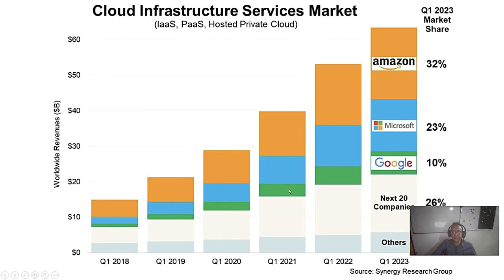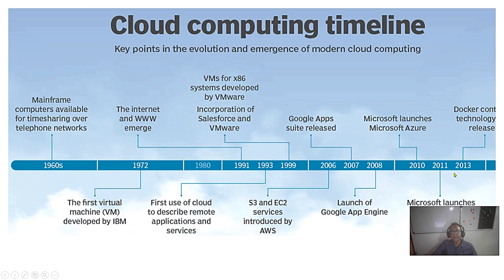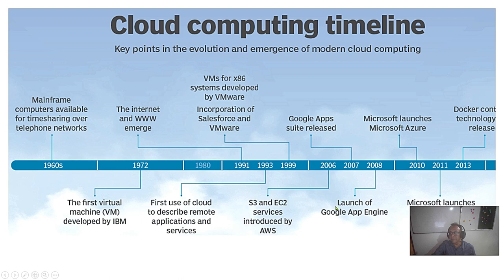The cloud infrastructure market shows Amazon still highest, followed by Microsoft and Google. AWS S3 is a simple object storage service, and EC2 is the compute engine — these are Amazon's service names. Google was initially more interested in the ad market and launched the Google App Engine in 2008. Issues like security are well addressed in the Google App Engine.